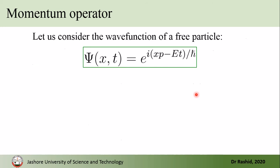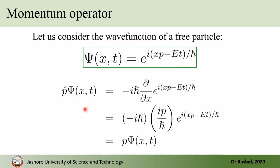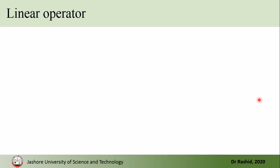To verify this, we act p-hat on the wave function of a free particle, which is a function of definite momentum and definite energy. When p-hat acts on this function, we apply the definition of p-hat. Acting this differential operator on the exponential function gives the exponential function multiplied by ip/ℏ. Simplifying, we get p — which is a number — multiplied by the function, confirming that p-hat acting on the function returns the momentum value times that function.